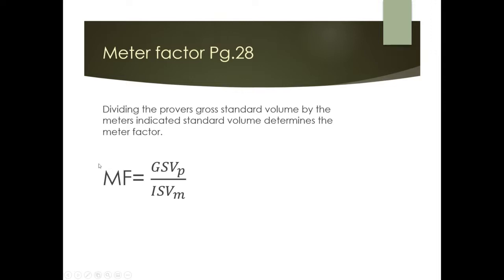This step-by-step process — spanning about six pages of the ILM — ultimately produces the meter factor, which is the number entered into the transmitter to make it read accurately.